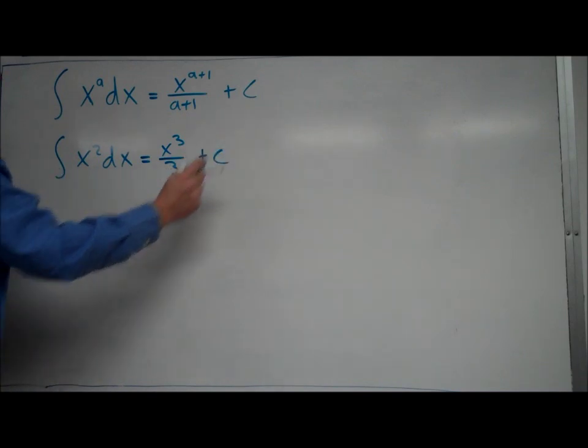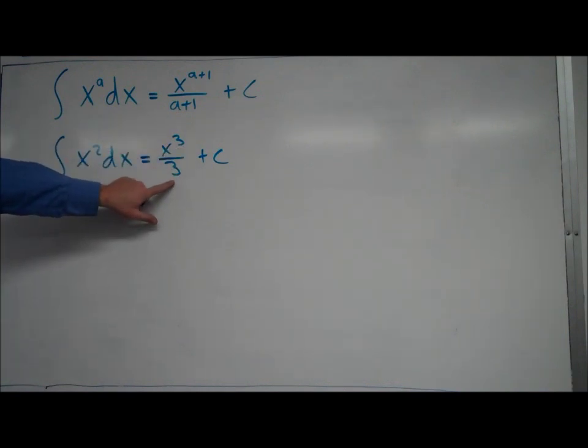And then we have our plus c, and I'll talk about that in just a second. So again, what I did was I added 1 to the exponent to make it the third power. I divided by that number, just like this power rule says up here, and I've got my antiderivative.